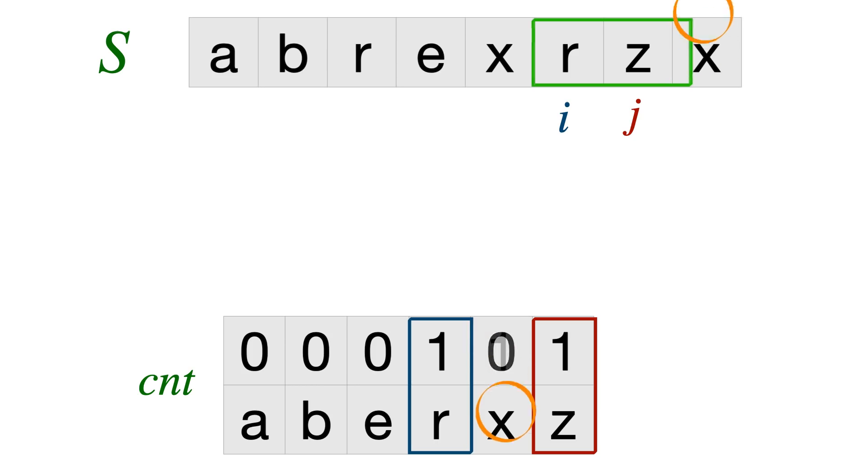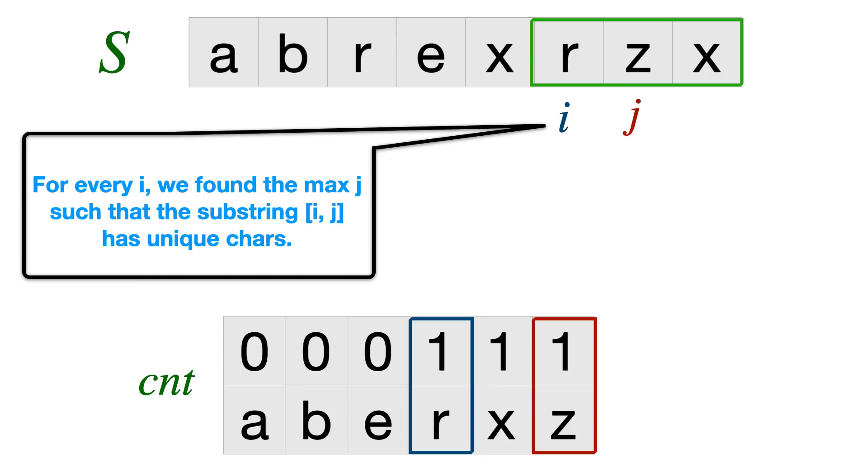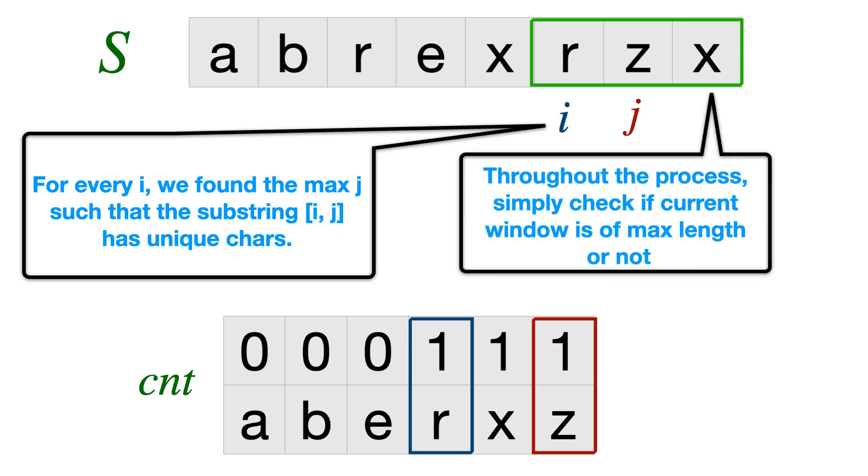And again, now you can move j in the forward direction. That's what we do. And what I want you to notice is that for every i, we found the max j such that the substring i to j has unique characters. That's something which we always ensured. And throughout the process, if we simply check the current window and check whether it's maximum length or not, we can actually get the longest substring, which is exactly what we have to return. So this is what the complete algorithm looks like in a walkthrough.